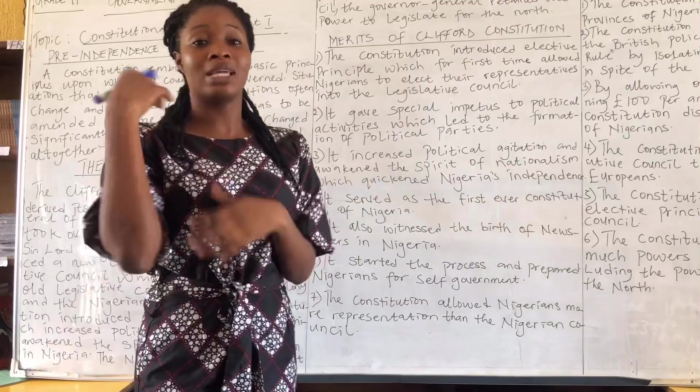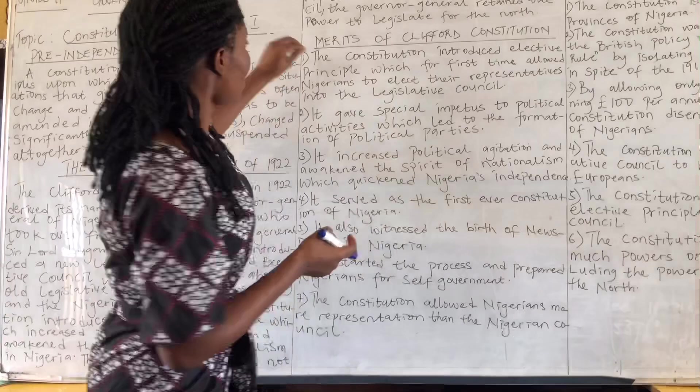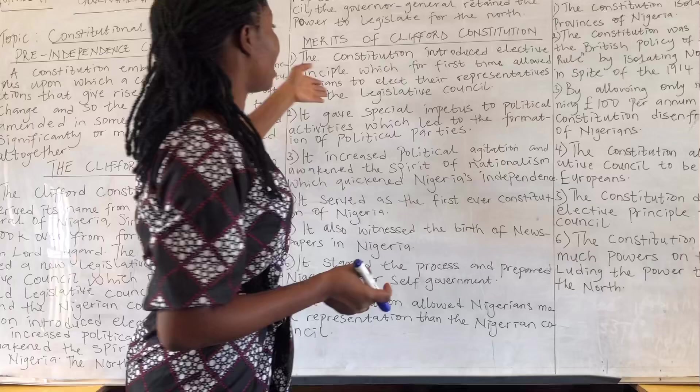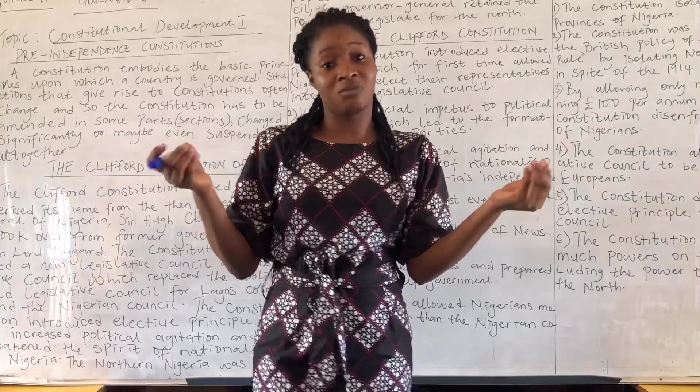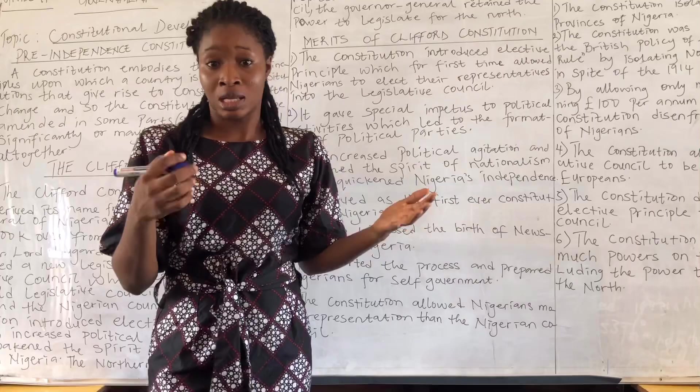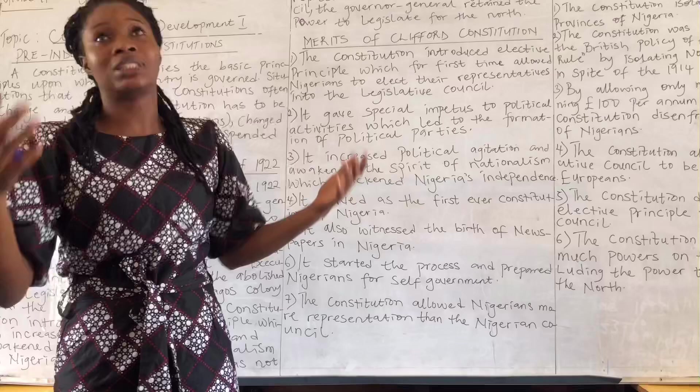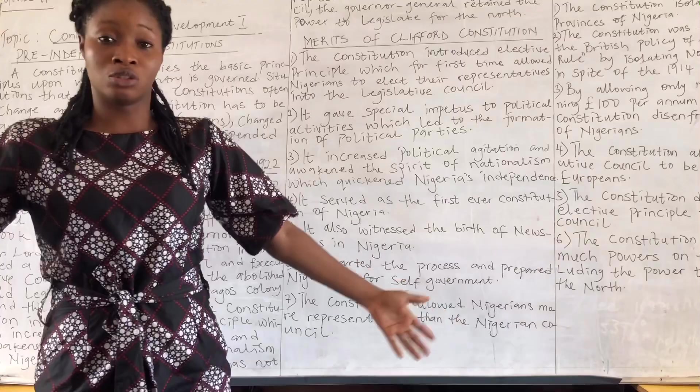Now we'll look at the merits of the Clifford Constitution. Number one: the constitution introduced the elective principle for the first time, which allowed Nigerians to elect their representatives into the legislative council. Although it was a limited franchise to an extent, people now had the choice to vote — they could decide who they wanted to put in place.